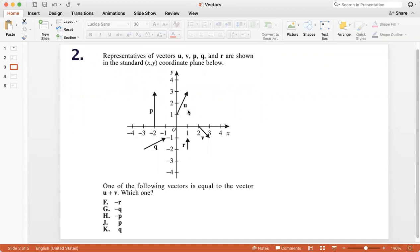So again, to add u plus v, I will simply bring v here, right? So I have simply taken the direction and the measure of v and I have brought it here. So u plus v will simply be this vector, right?